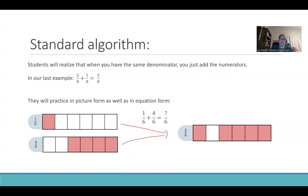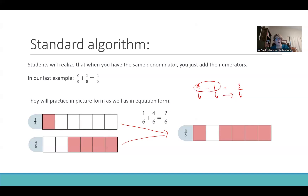By the way, if it was subtraction — say four-sixths minus one-sixth — they'll also get used to the idea of going straight across the numerators, and the denominator just stays the same. So they'll practice this for a while — probably a week or two, maybe even longer. All I know is they're going to practice it for a while.